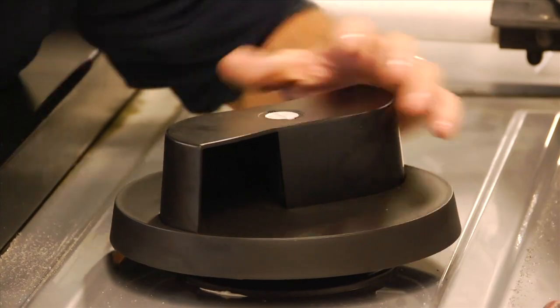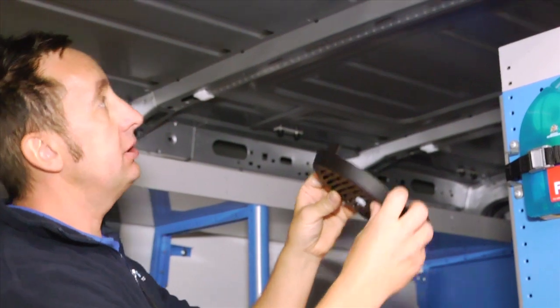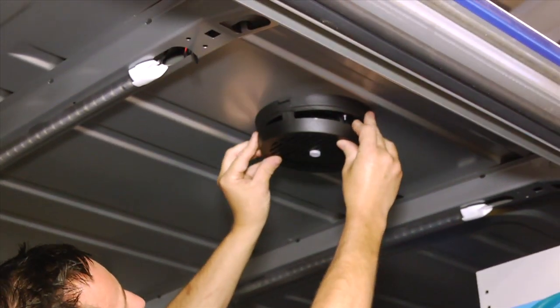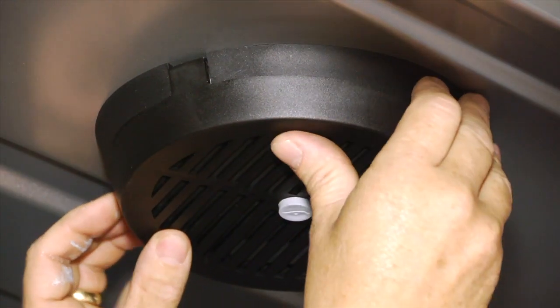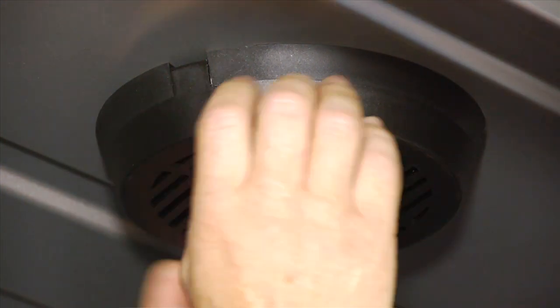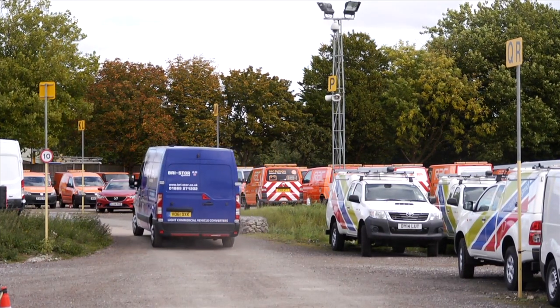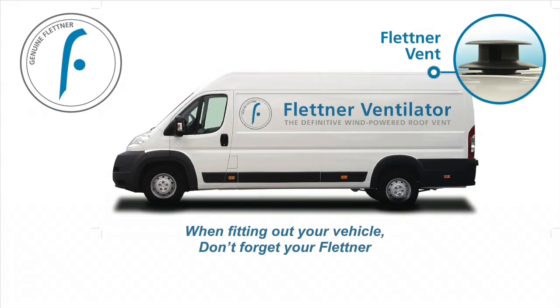If you have fitted the ventilator correctly, the rotor should spin freely and there should be no vertical movement. All we need to do now is finish off the fitting process by clipping the shutter to the support ring on the inside of the vehicle. When fitting out your vehicle, don't forget your Flettner.